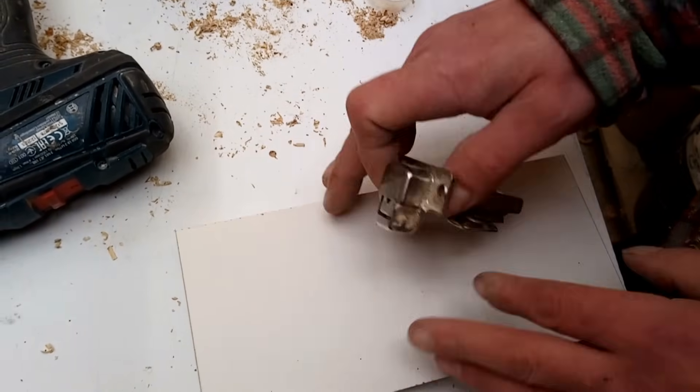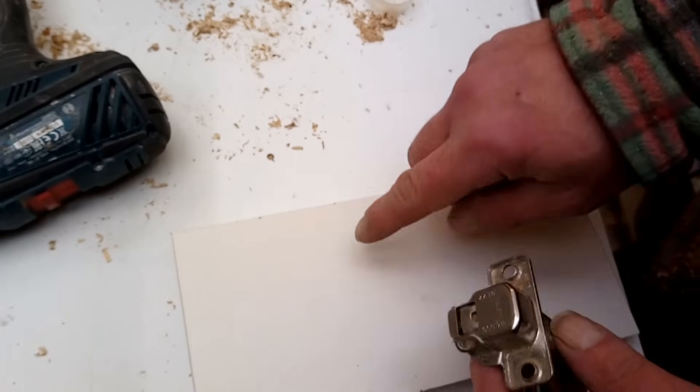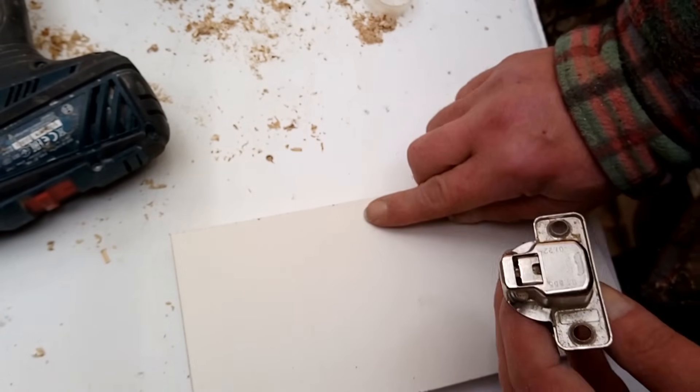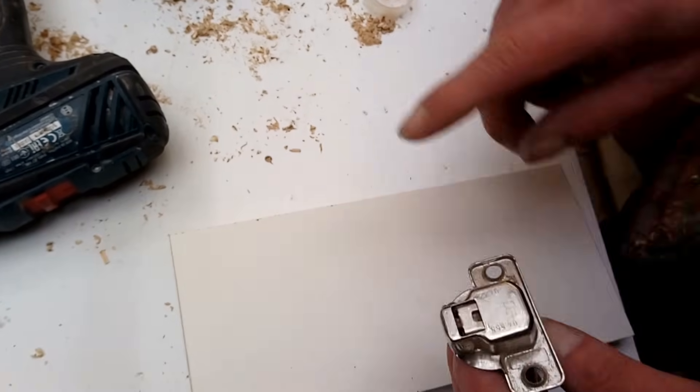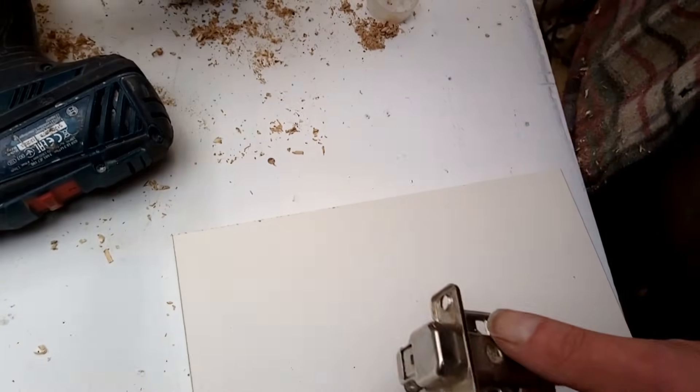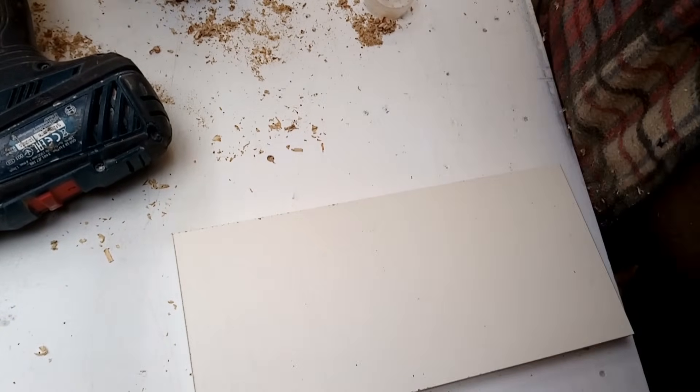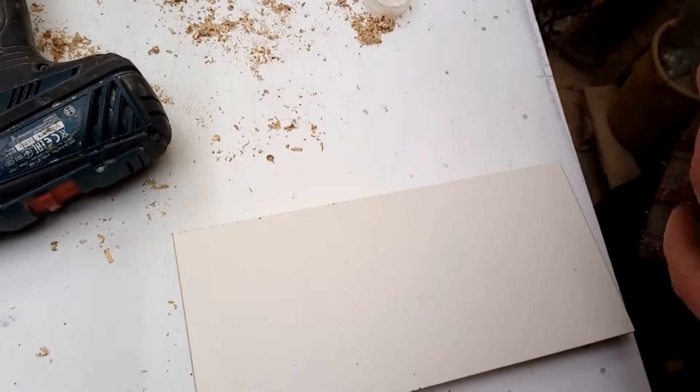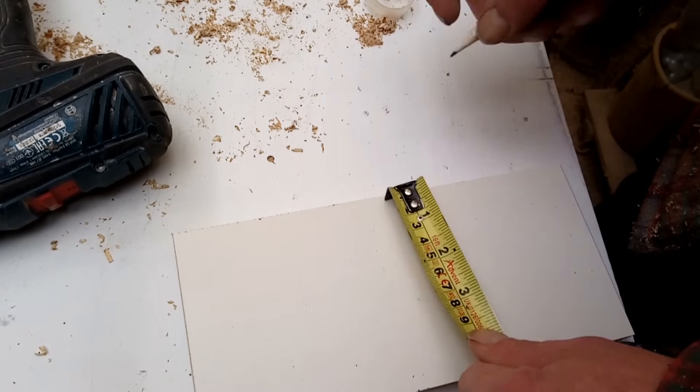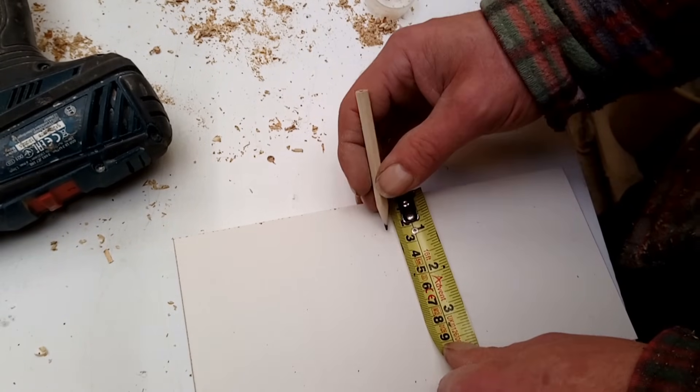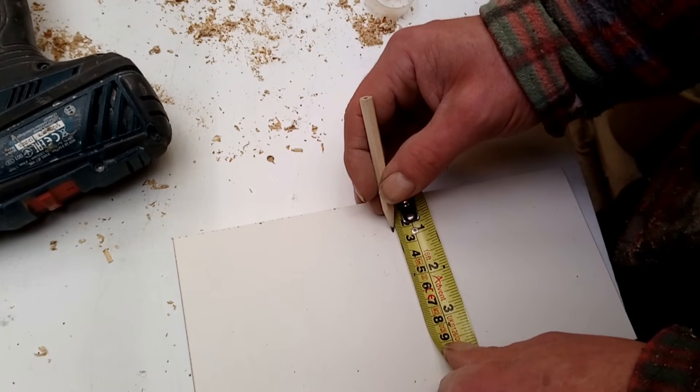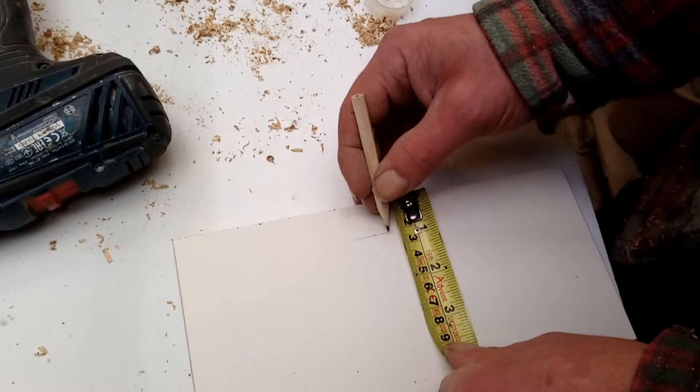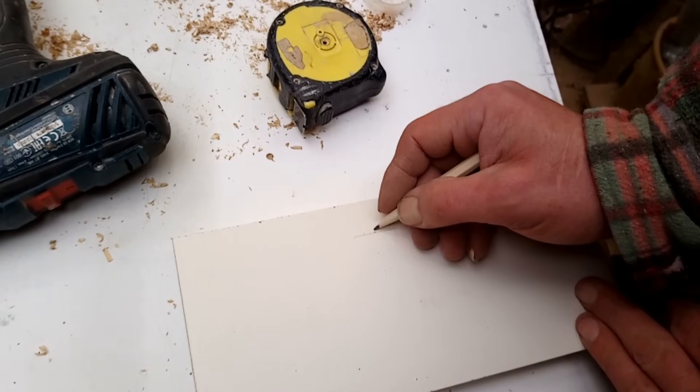Anyway, on the inside of your door you need a 35mm hole, 3 or 4mm from the edge. 35 divided by 2 is 17 and a half, plus 3 or 4mm gives you about 21. So make a mark at 21 and wherever you want your hole to be.